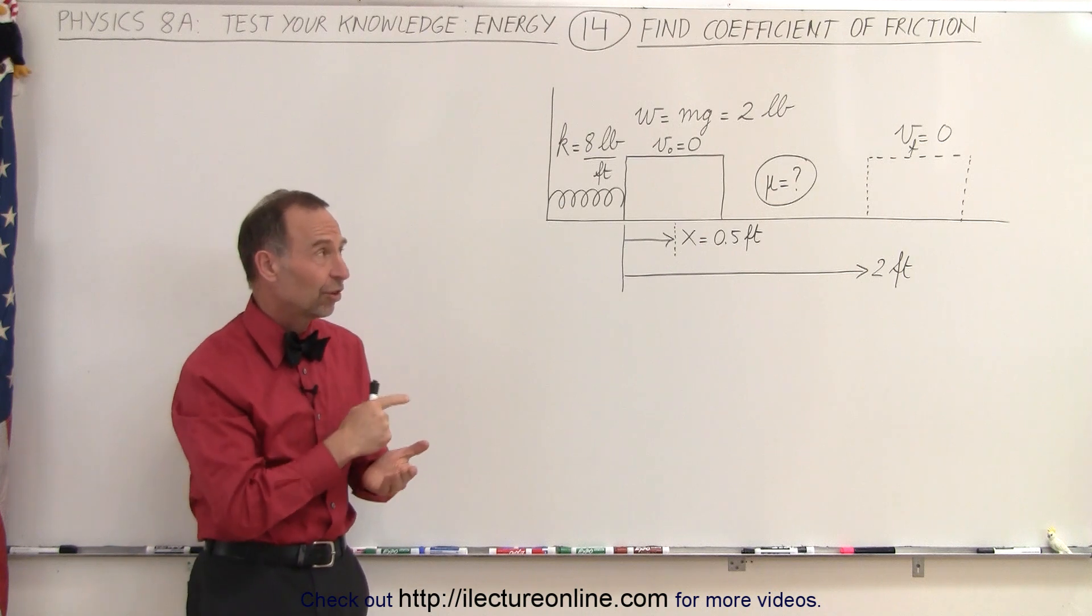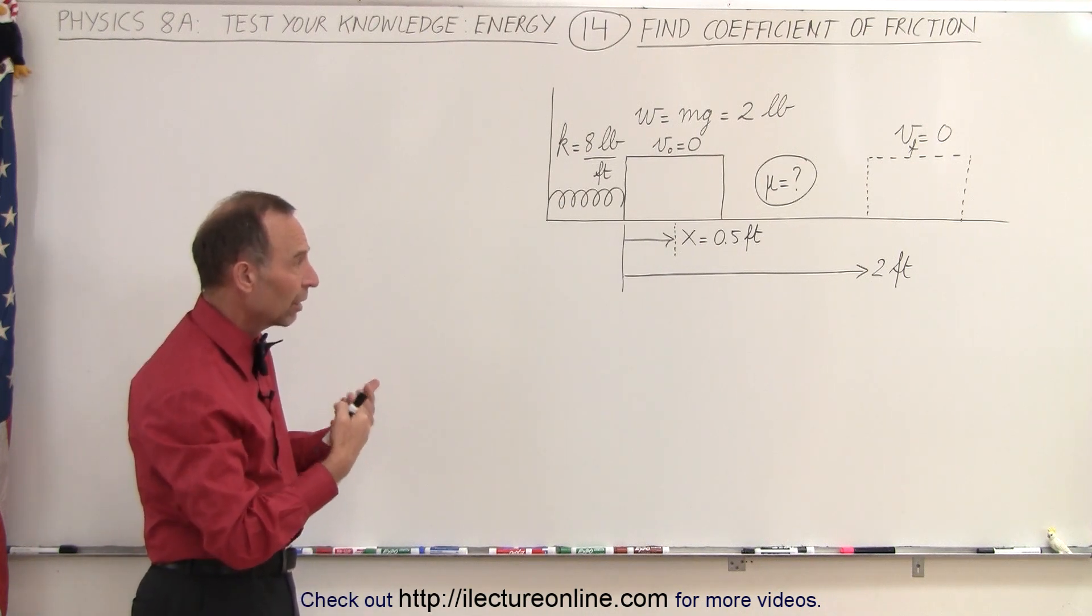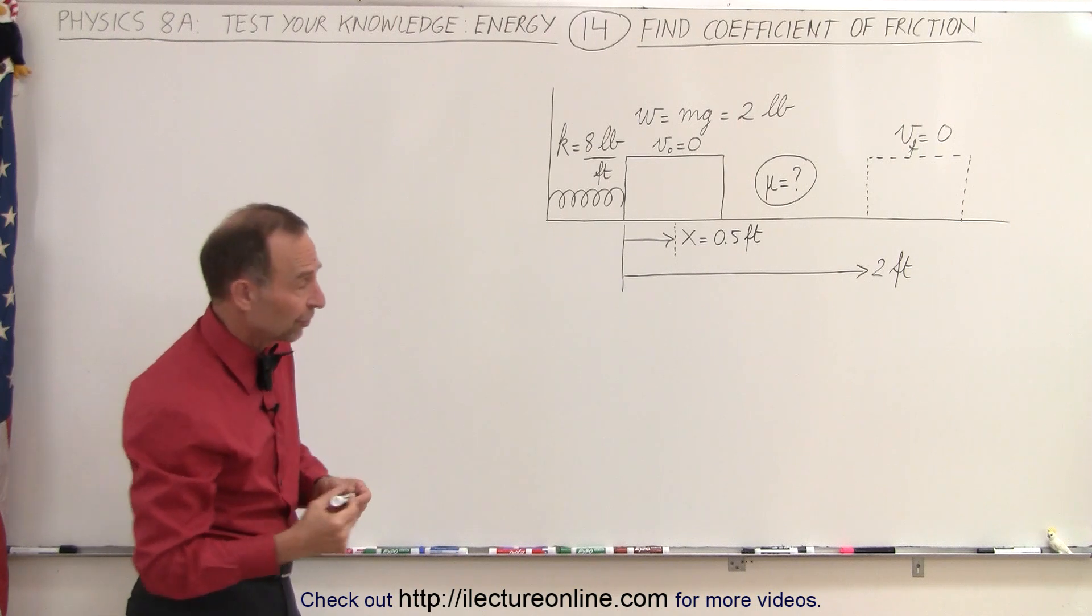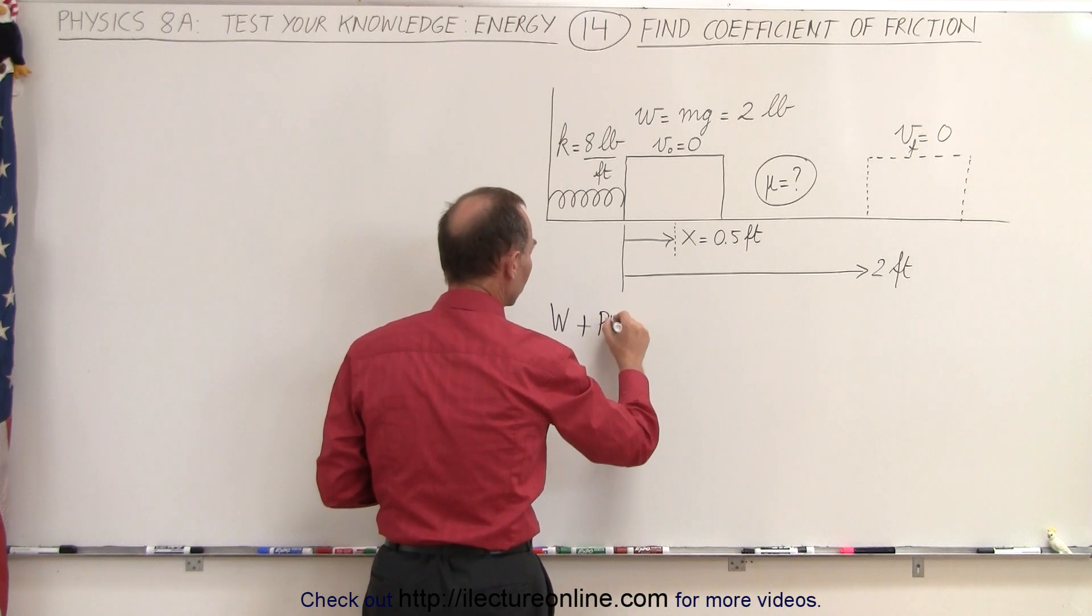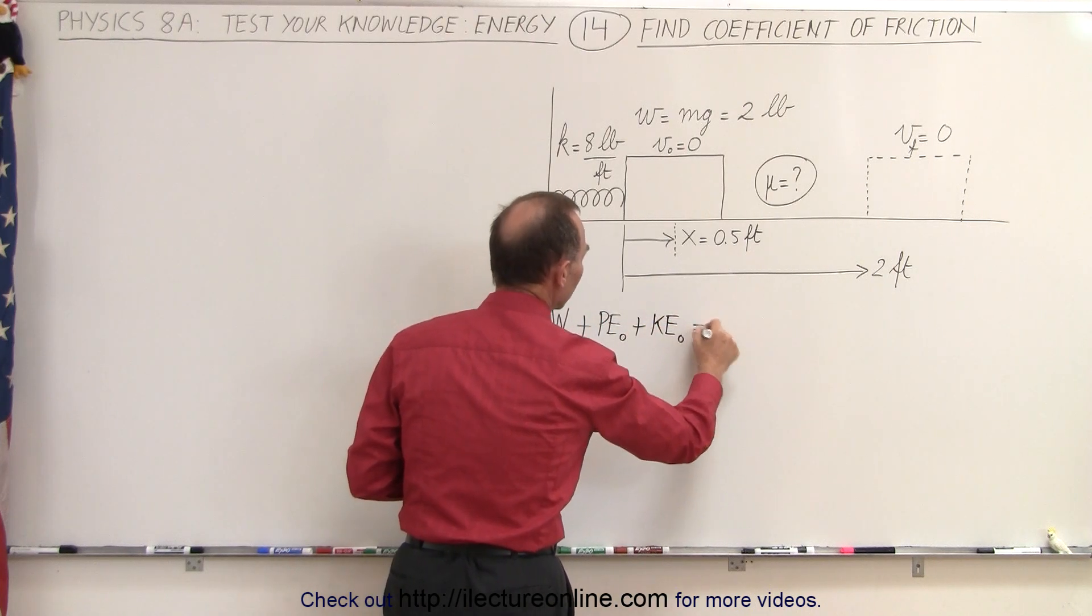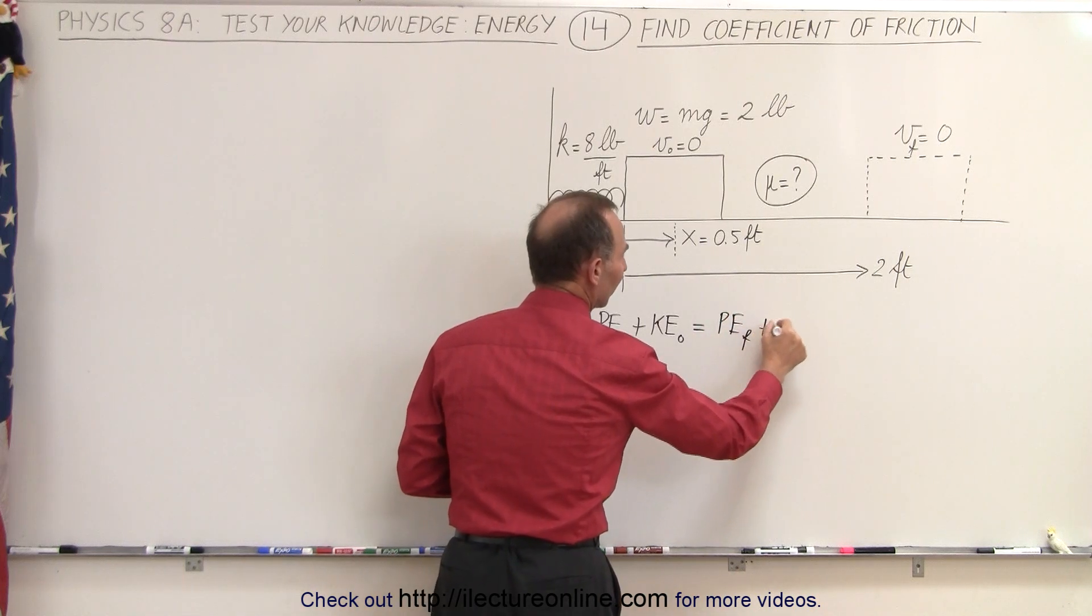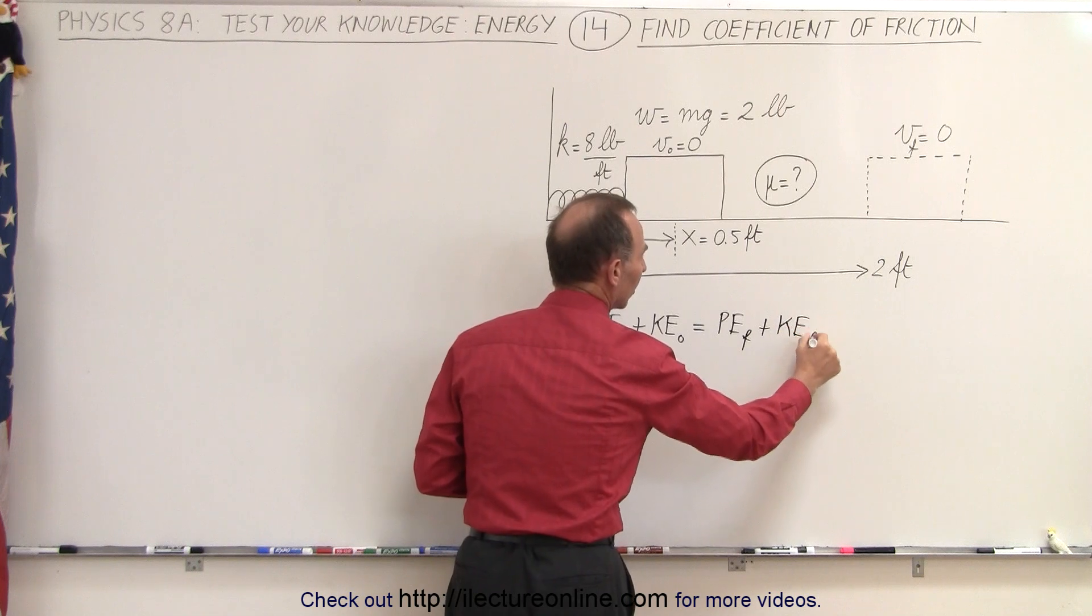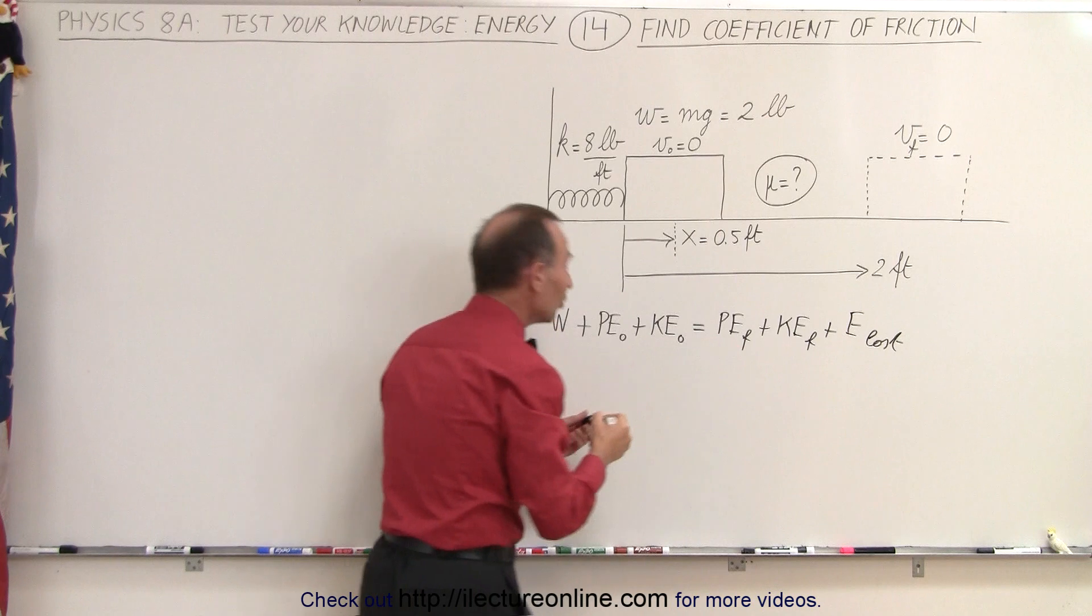The best way to approach this problem would be to use the conservation of energy equation. So we start out with the work put into the system plus the original potential energy plus the original kinetic energy is equal to the final potential energy plus the final kinetic energy plus any energy lost in the action.